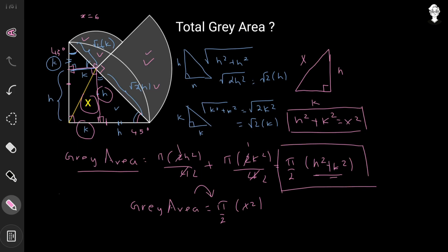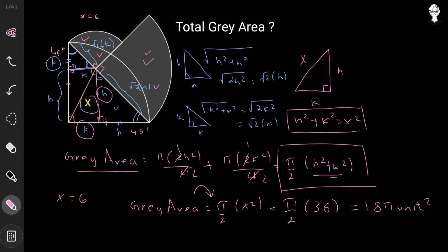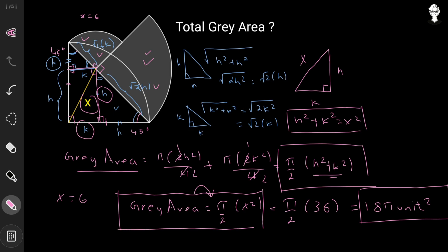Since x equals 6 in this question, the gray area = π/2 · 6² = π/2 · 36 = 18π square units. The more elegant result is the general formula: the gray area always equals π/2 · x², where x is the length of the yellow line segment from the center of the largest quarter circle to where the two smaller quarter circles meet.